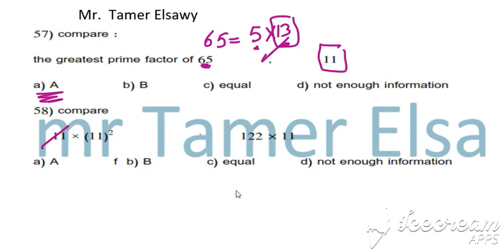Cancel 11 from both sides. 11 power 2 is 11 times 11, equals 121. This is 122. Which is bigger, 121 or 122? Okay, 121. We select A.